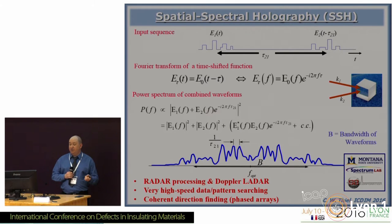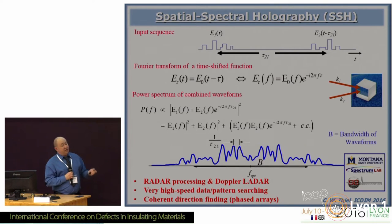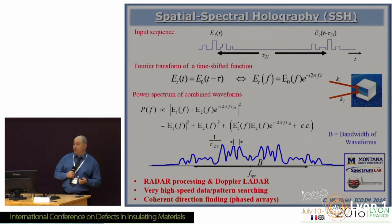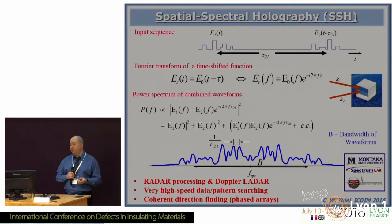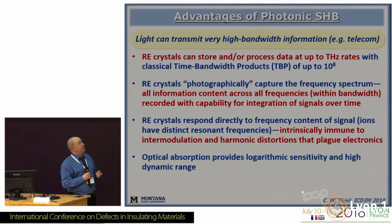You can also do similar things in the time domain, where you send in complex pulse patterns. By thinking about Fourier arguments in terms of what the spectrum looks like when those get combined in the material, you can do things like correlation and convolution, which can be used for pattern matching, radar signal processing, arranging information — a whole range of applications.